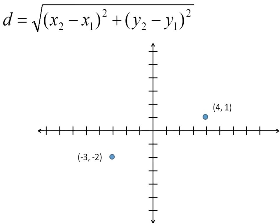So let's go ahead and take a look at that equation with two different points. The distance formula is basically a way for us to calculate the distance between two given points on a graph. That's all it is.